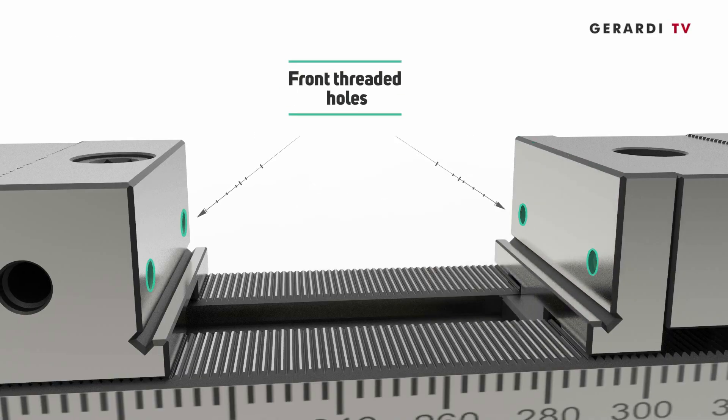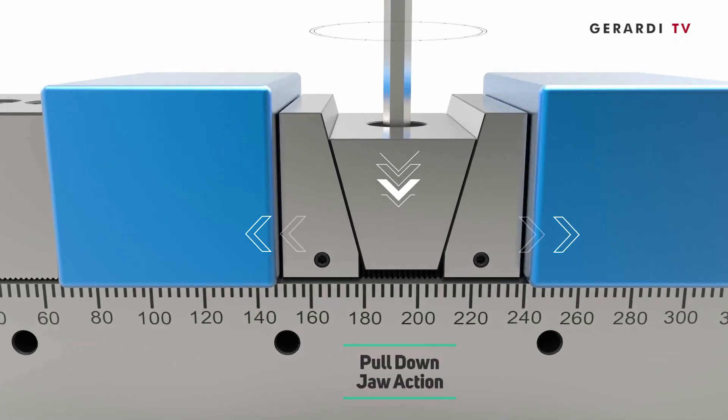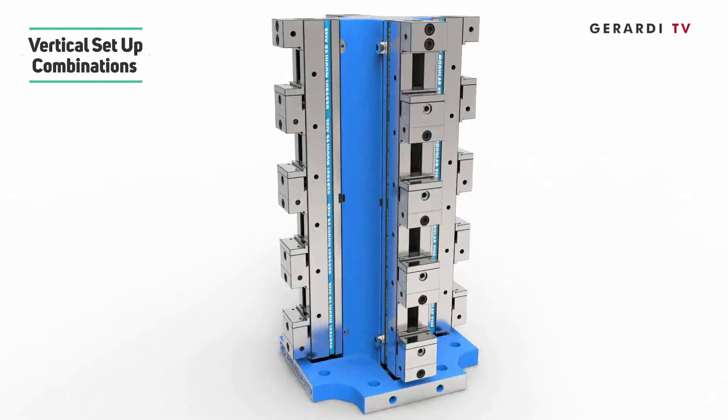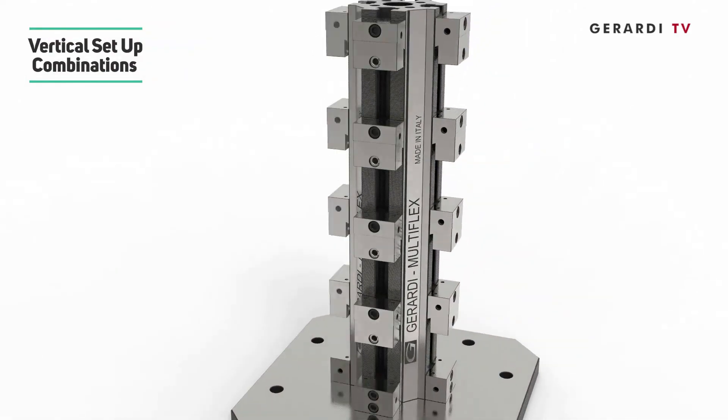Feature 6: Front threading holes and guided pull-down jaw action thanks to the ground comb teeth jaws. Feature 7: Possibility of vertical setup through tombstones or solid vise cube bodies.